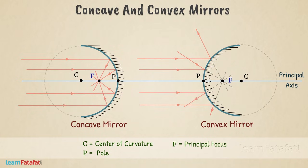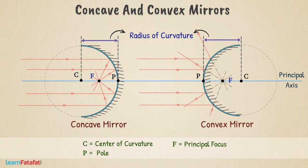The distance between pole and the centre of curvature is called radius of curvature, denoted by capital R.